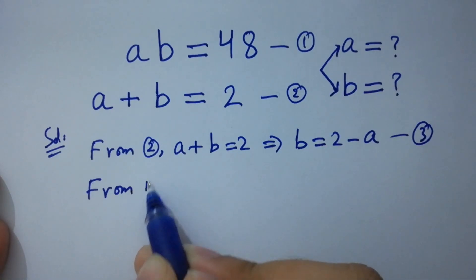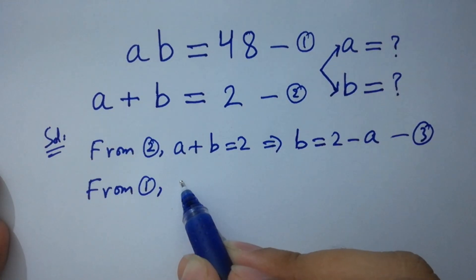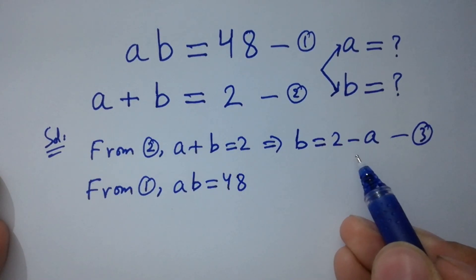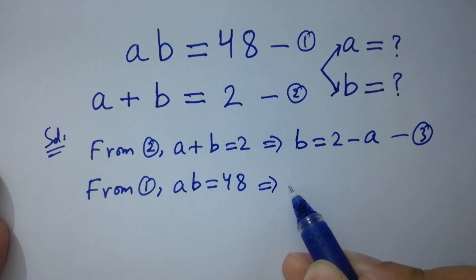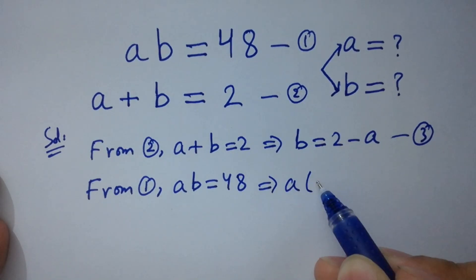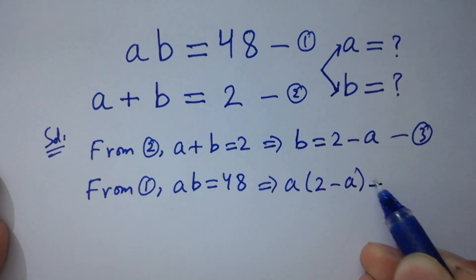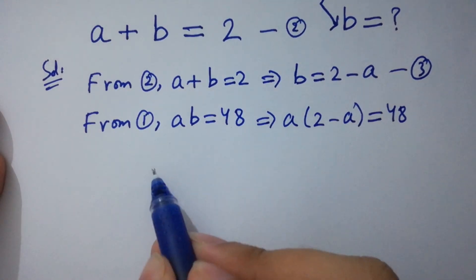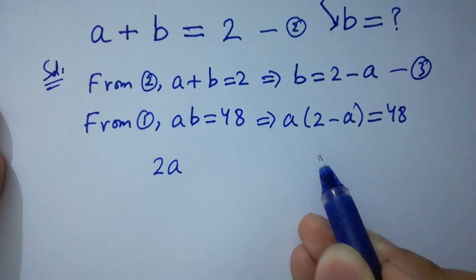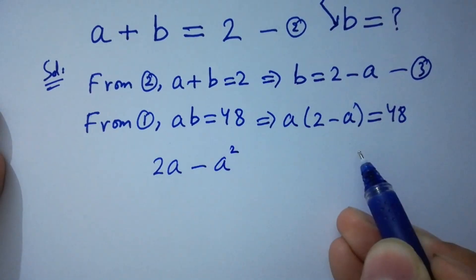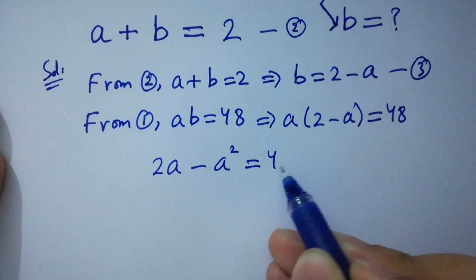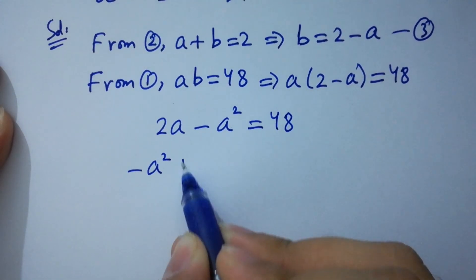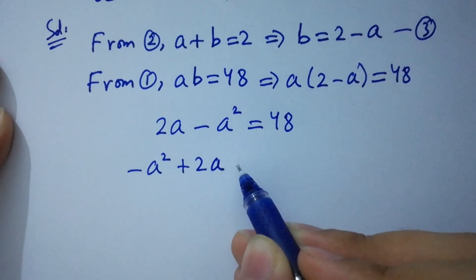From the first equation, ab equals 48. Put the value of b: a times (2 minus a) equals 48. Simplifying this: 2a minus a squared equals 48, which gives minus a squared plus 2a minus 48 equals 0.